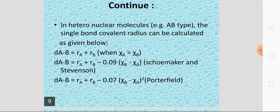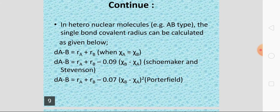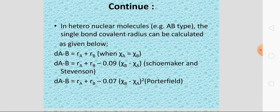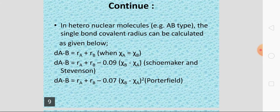But in case of different electronegativity, there are two methods. The Shoemaker and Stevenson method gives: DAB = RA + RB − 0.09 × (XB − XA). The Porterfield method gives: DAB = RA + RB − 0.07 × (XB − XA)². Using these formulas, you calculate the inter-nuclear distance in heteronuclear molecules, then take half to get the covalent radius.